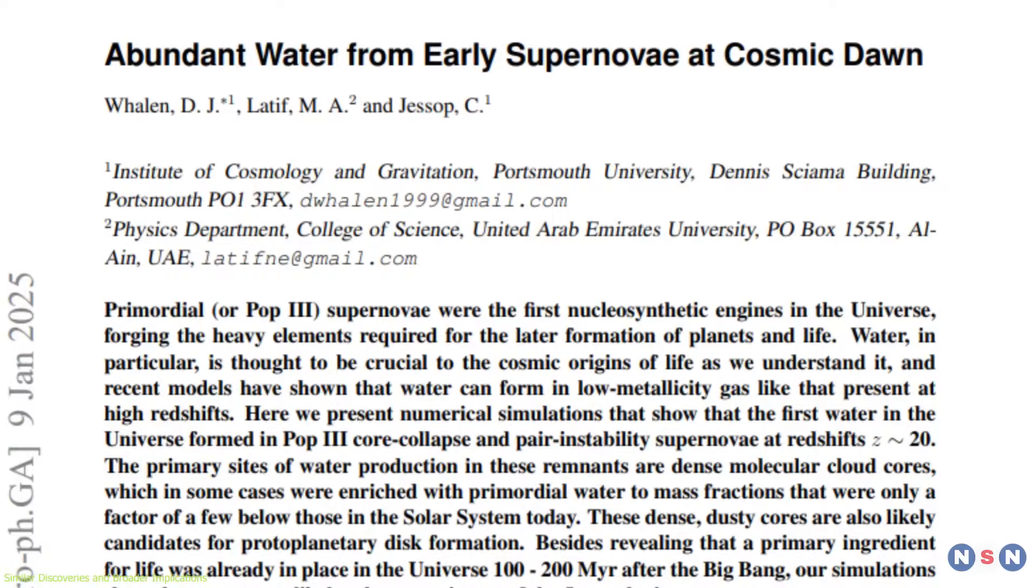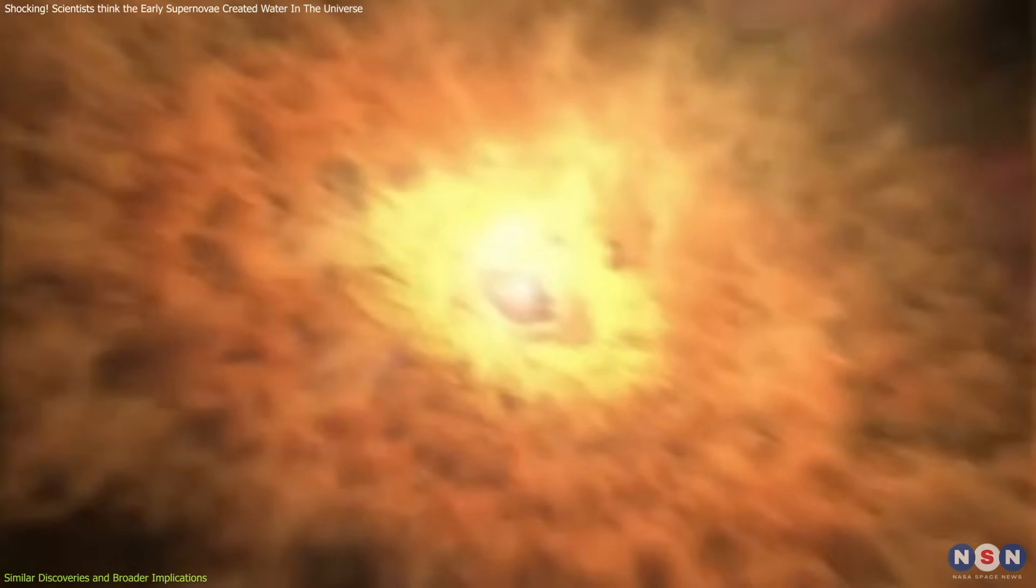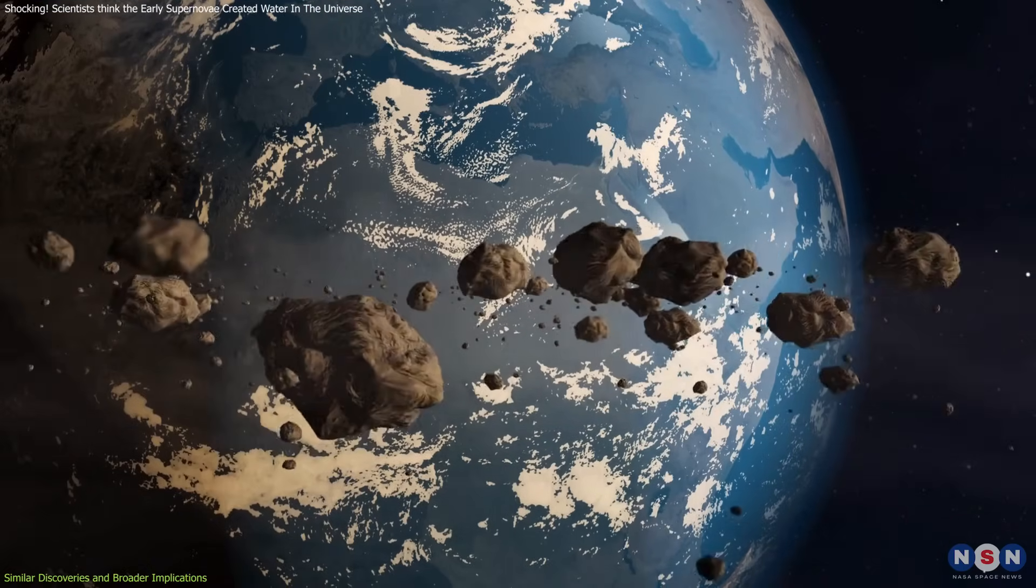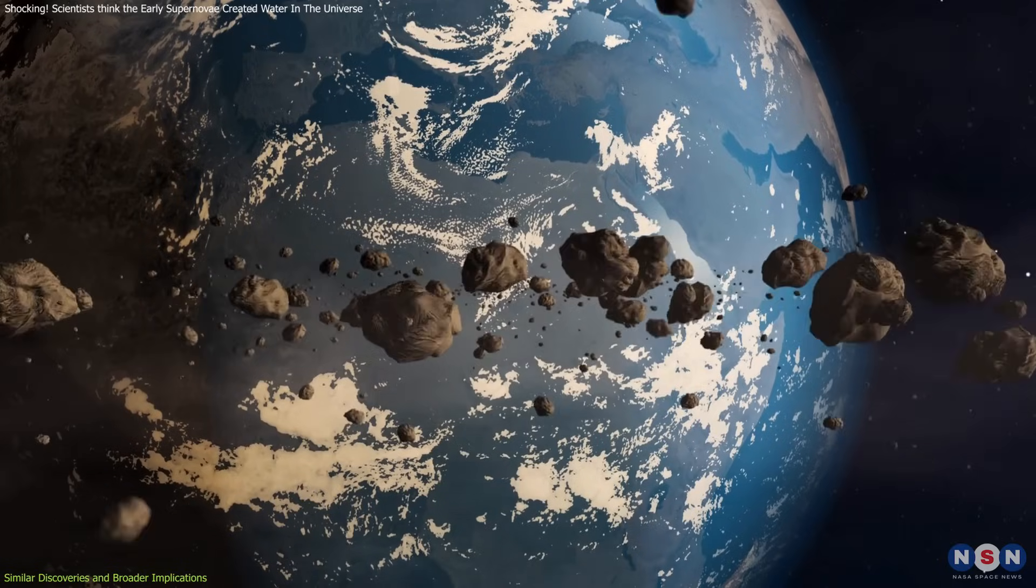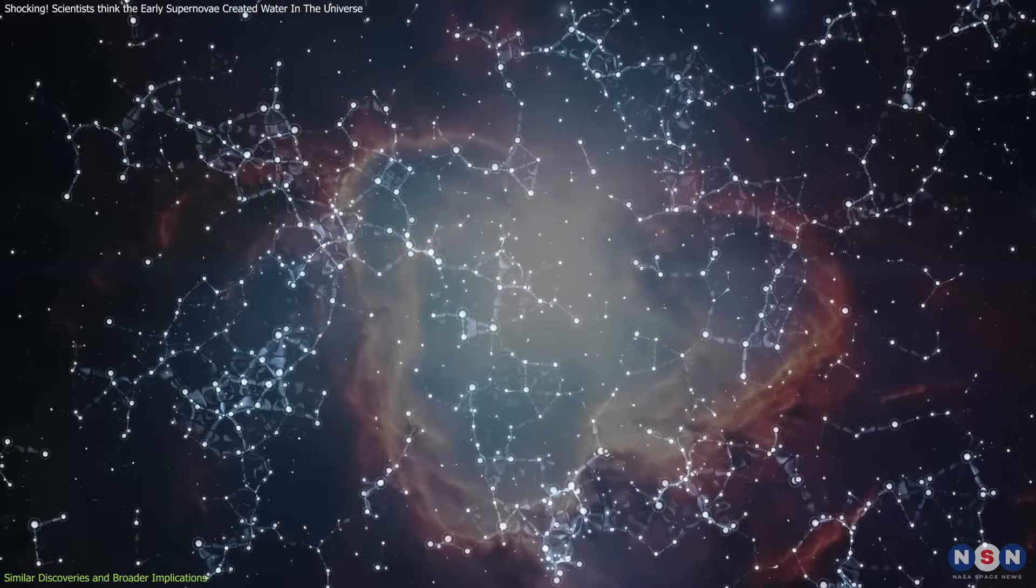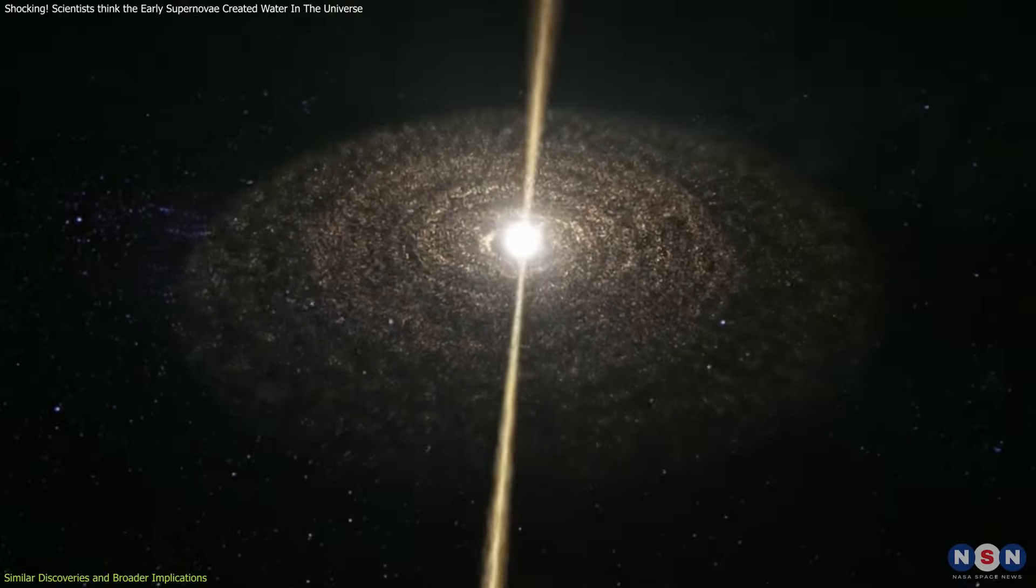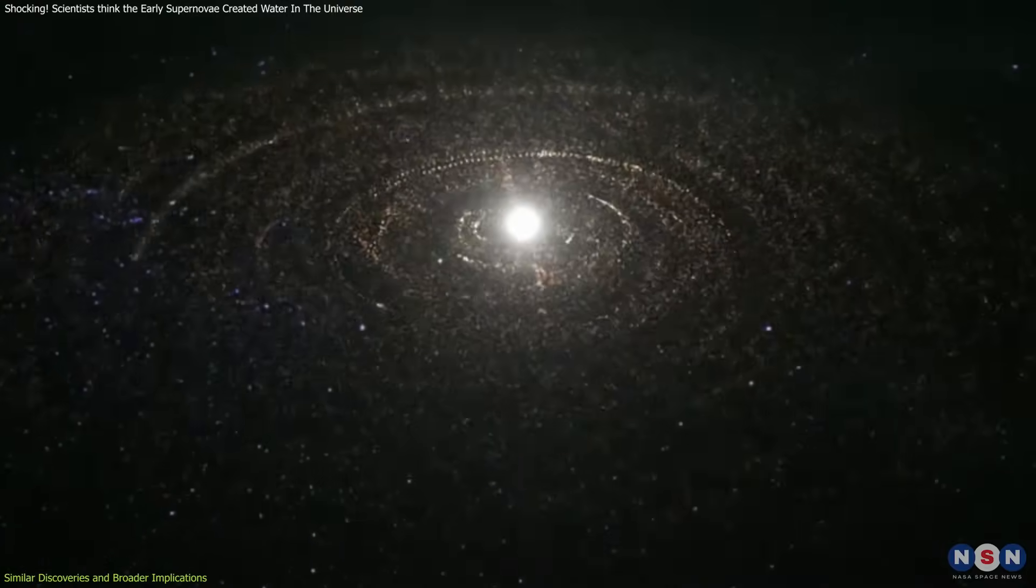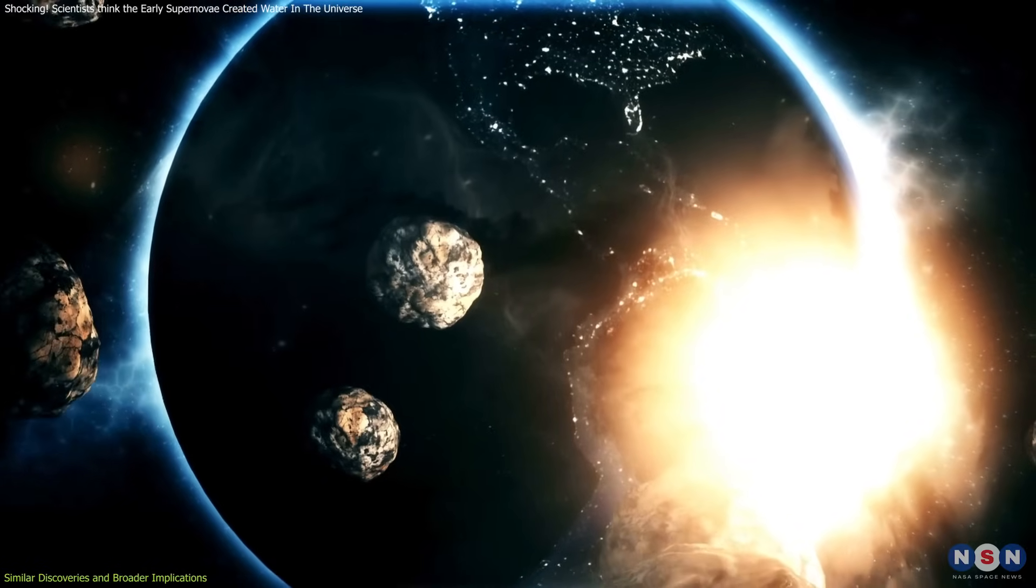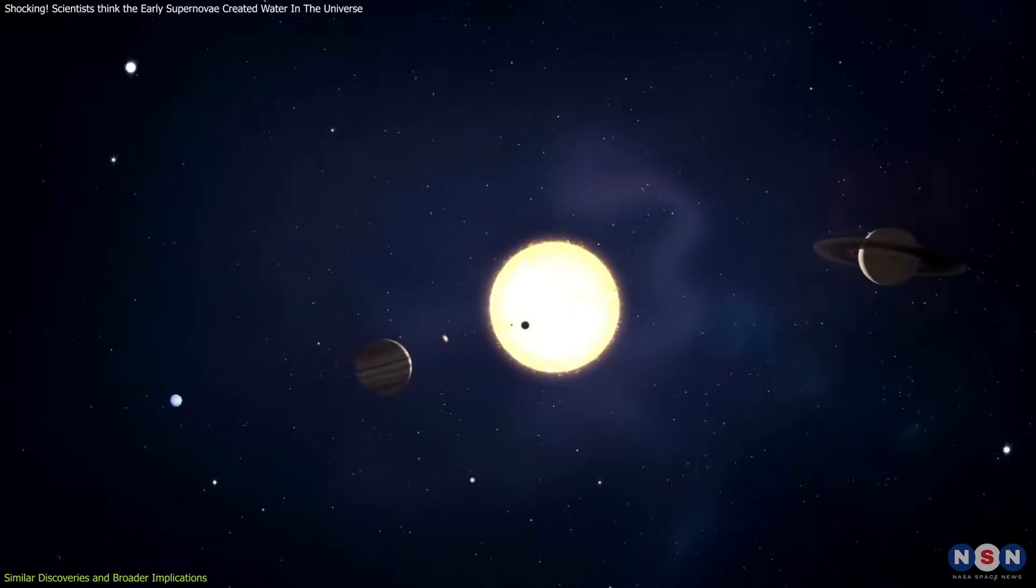Moreover, this research has profound implications for understanding water's role in planetary formation. Traditionally, Earth's water has been attributed to icy comets or hydrated asteroids. However, the abundance of water in the early universe suggests that water was already widespread long before the solar system's formation. This shifts the narrative of Earth's water from being a local anomaly to part of a universal process that dates back to the dawn of cosmic history.